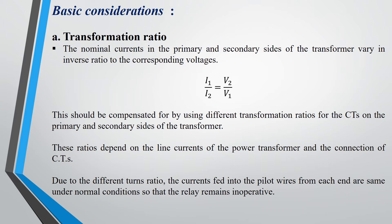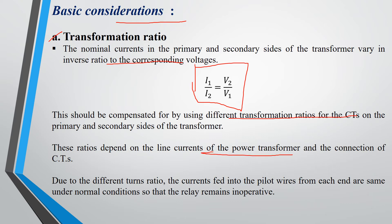There are basic considerations that need to be taken care of while applying differential protection to transformers. The first one is transformation ratio. We know that a transformer is used for increasing or decreasing voltage or current level, and therefore the primary and secondary currents are not the same, as they vary in inverse ratio to their corresponding voltages. Therefore, to compensate this, we need to apply different transformation ratios for the CTs — meaning the CT ratios applied on both sides of the transformer must be different. These ratios depend upon the line current of the power transformer and the connections of the CT, whether in star or delta.